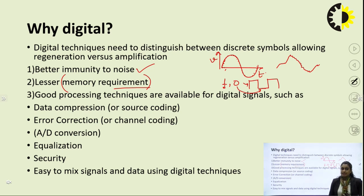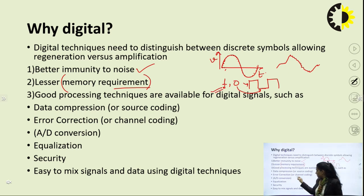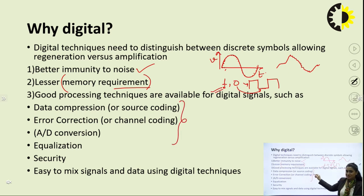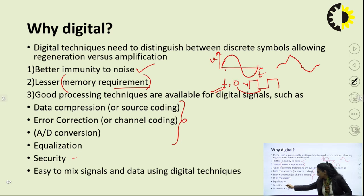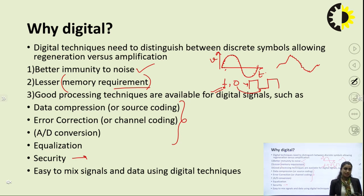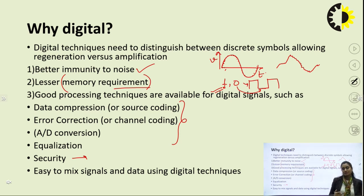A third advantage is that good processing techniques are available for digital signals. With digital communication, we can implement various encryption techniques, data compression techniques, and security features. Most coding schemes are available for binary bits of data, making it better to have data in digital format. These three are the major reasons to switch from analog to digital communication, though there are many more reasons that can be added.